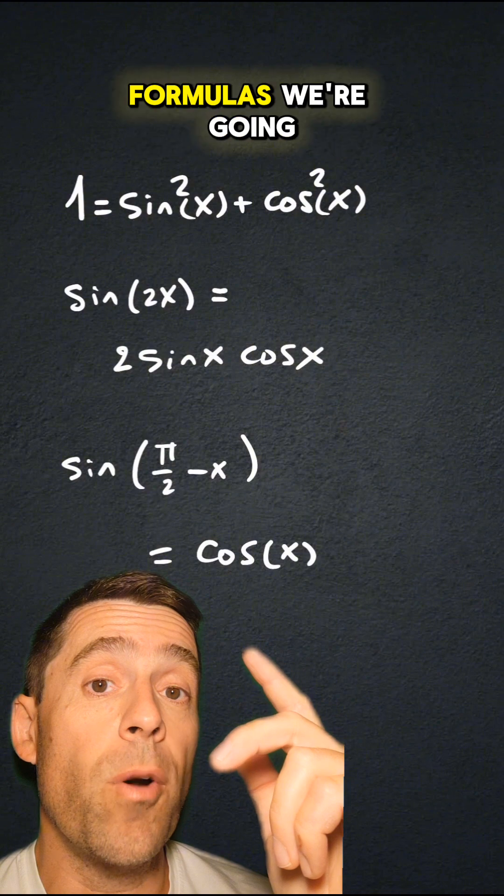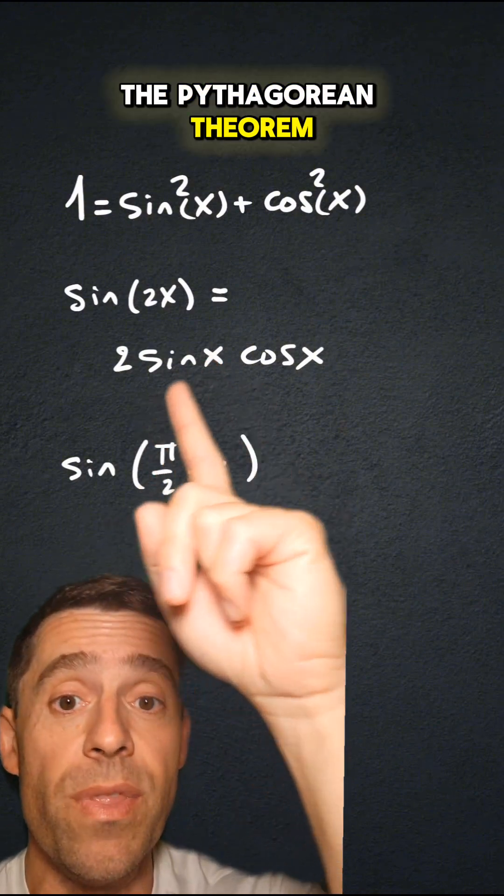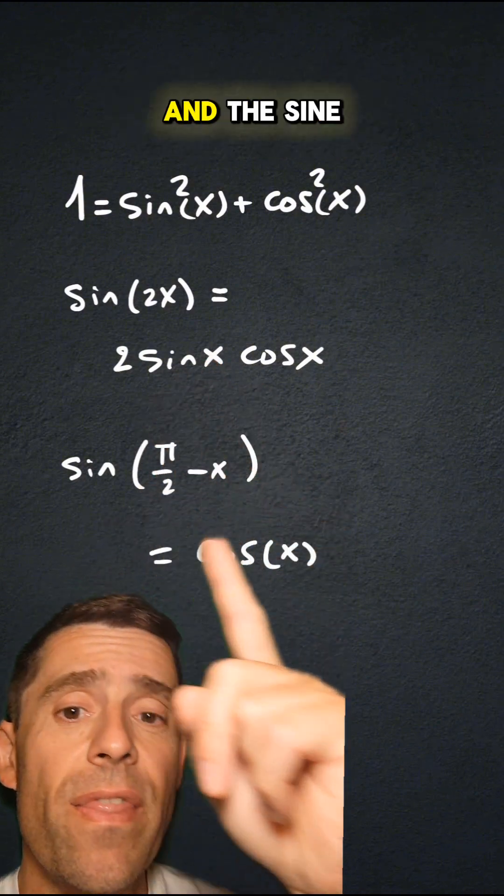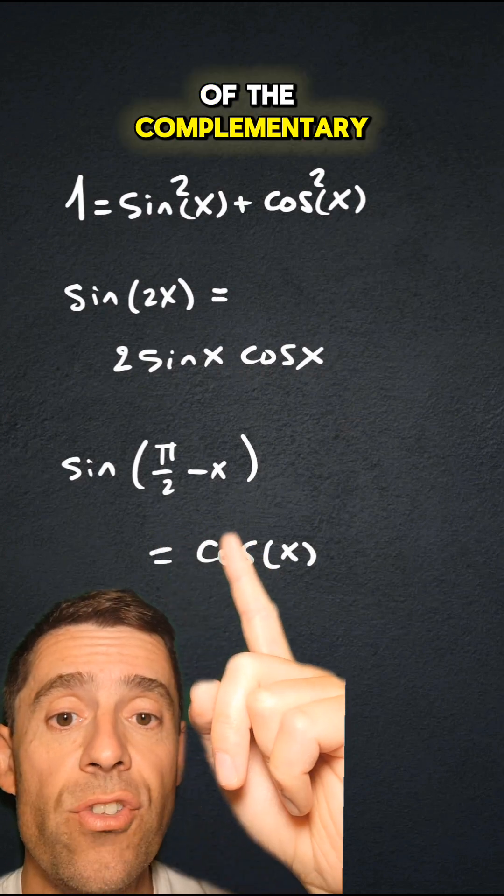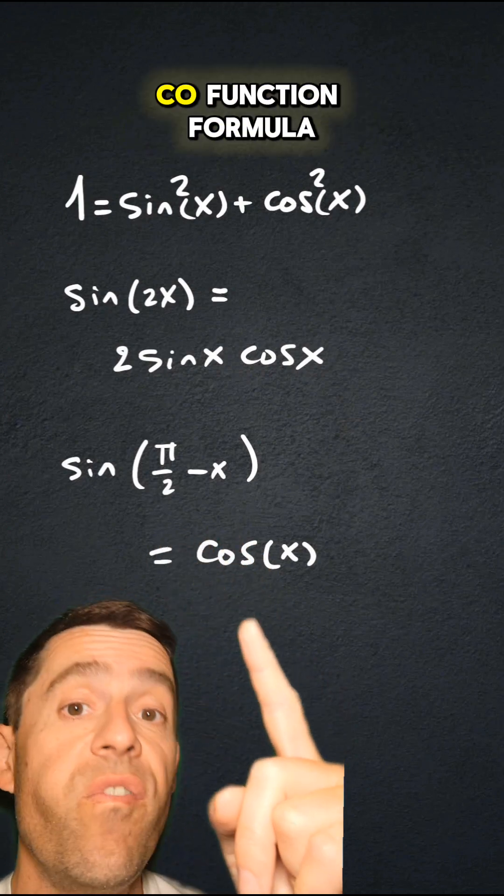These are the trigonometric formulas we're going to use: the Pythagorean theorem, the double angle formula, and the sine of the complementary angle or the co-function formula.